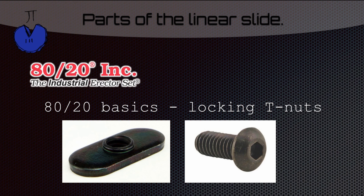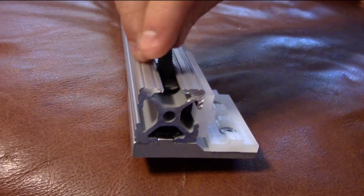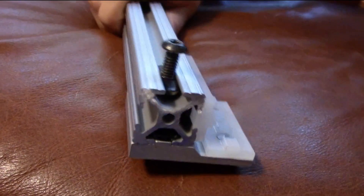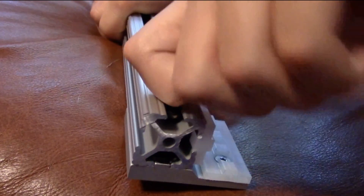Here are two basic parts that are really helpful when working with 80-20: the locking T-nuts and the quarter-20 button-head screw. Here you can see the locking T-nut — you use the screw to tighten it down in. As you can see, that's not moving anywhere.